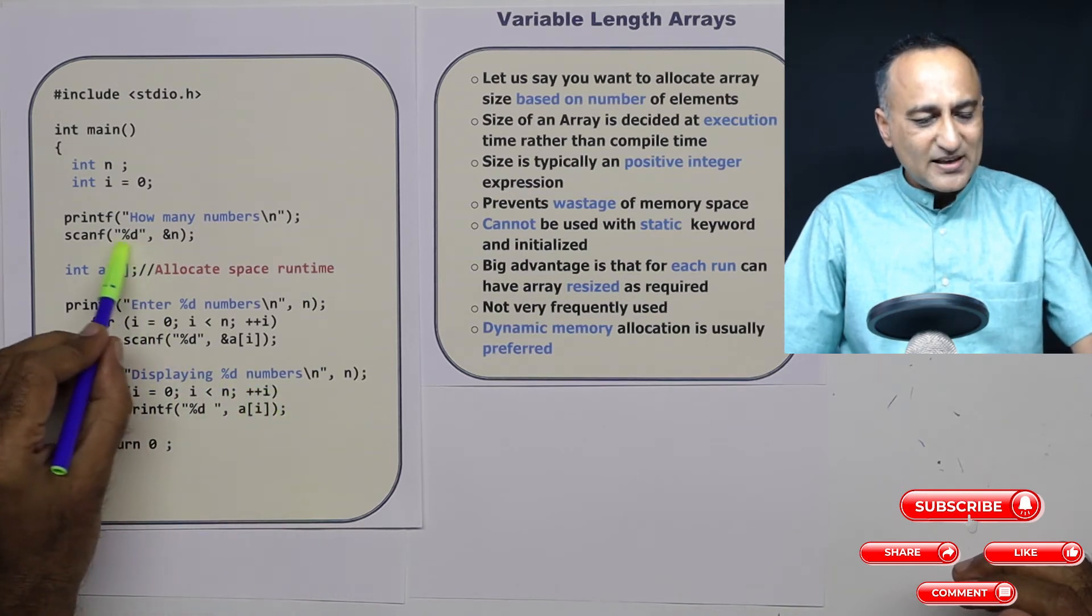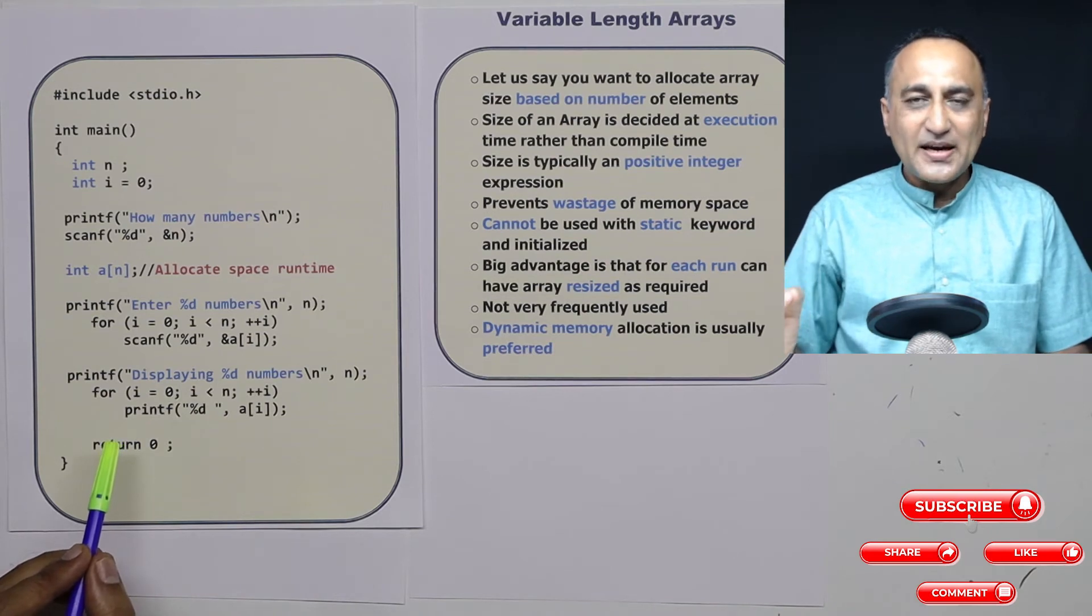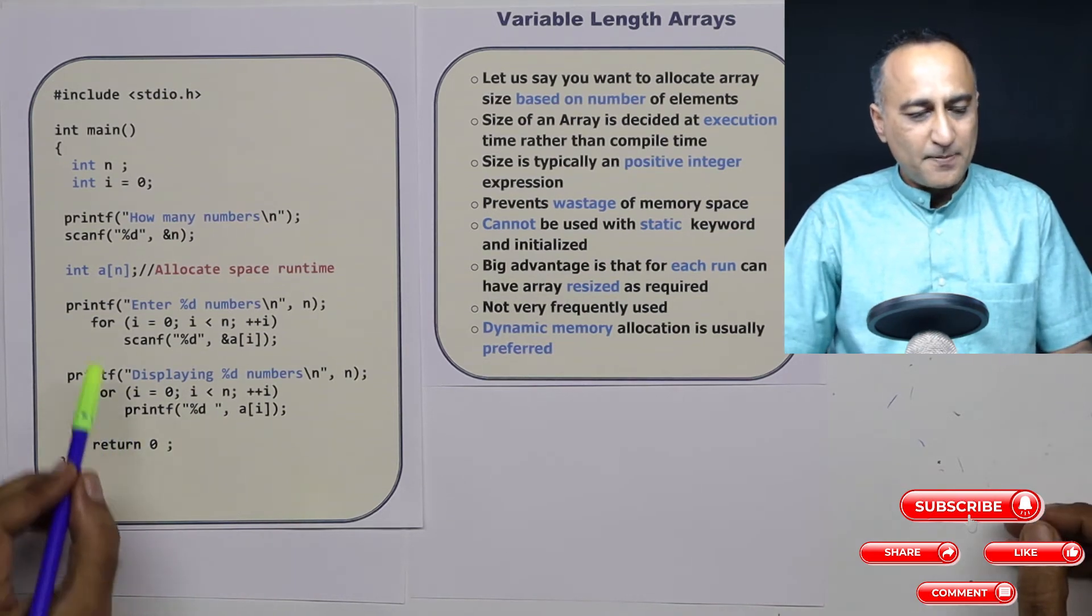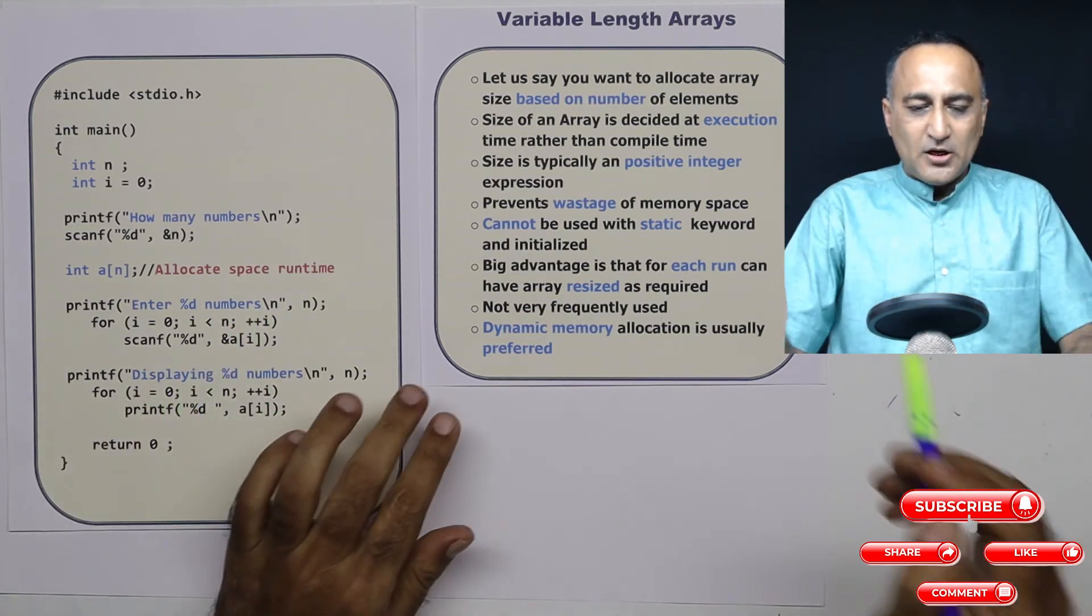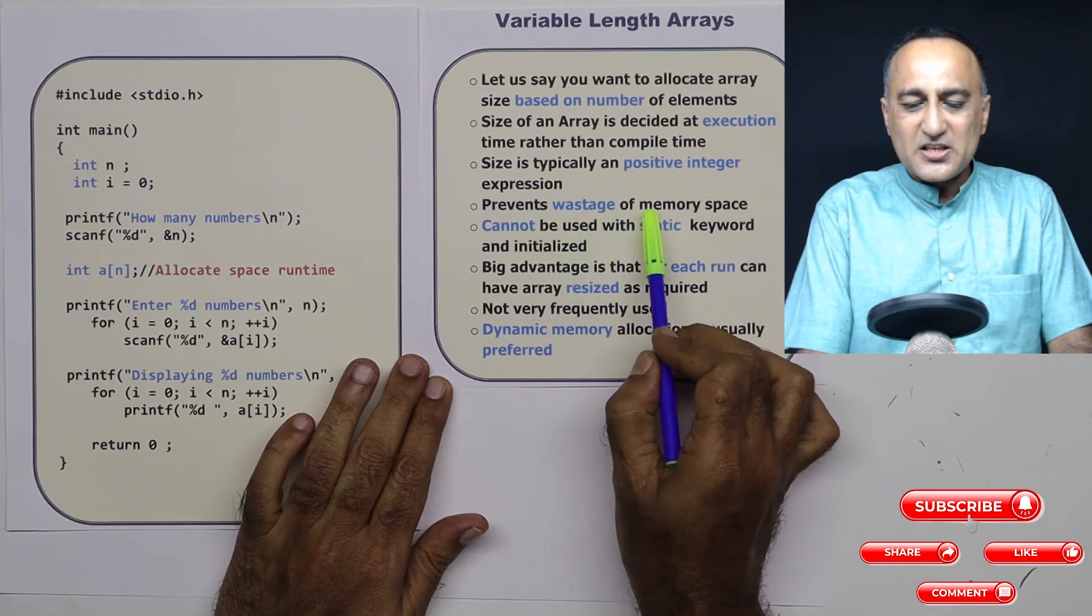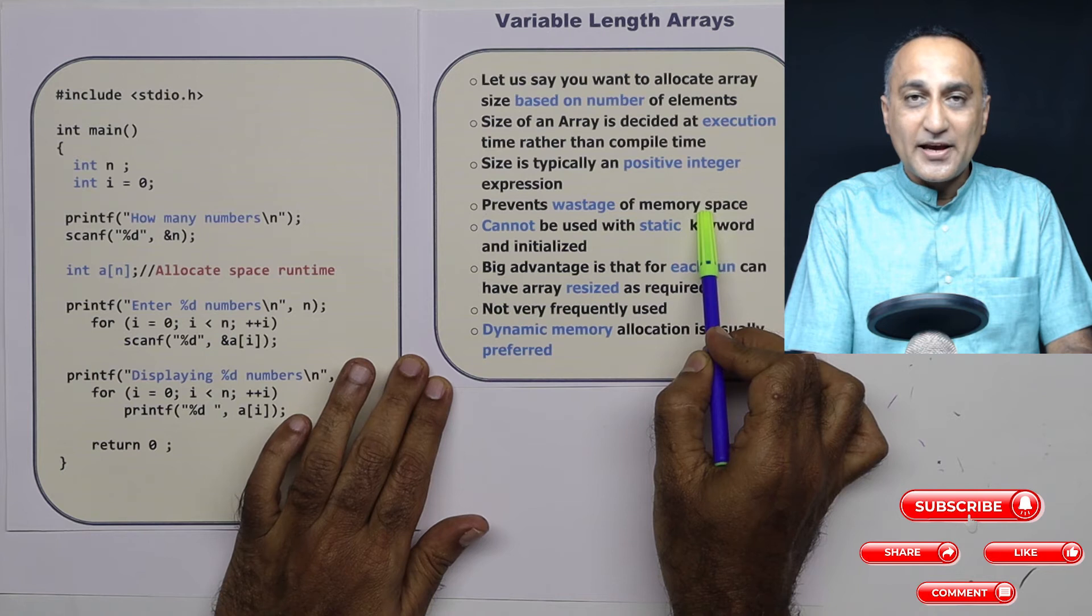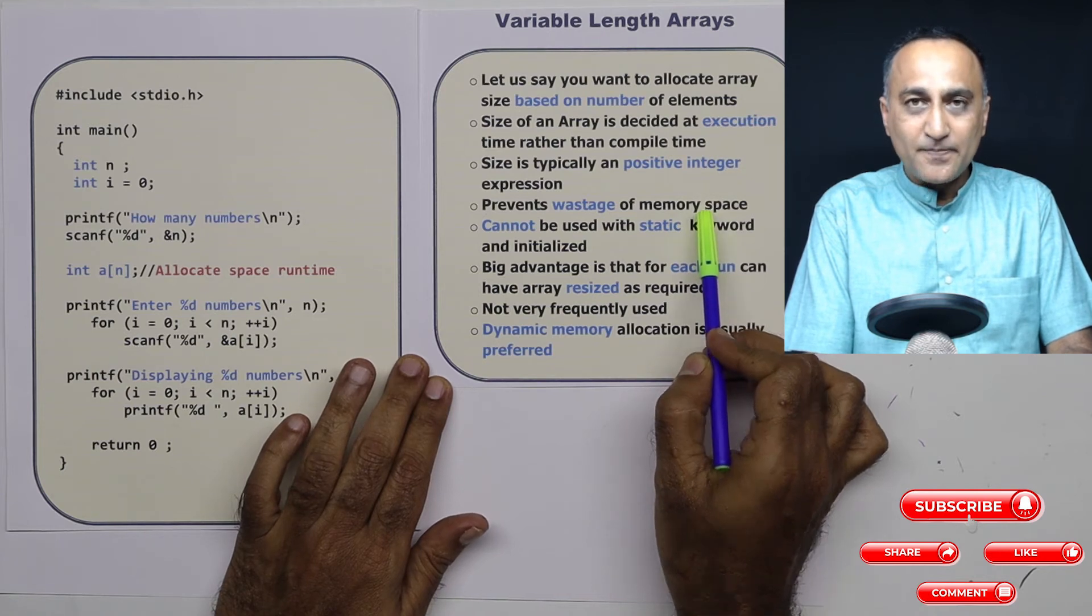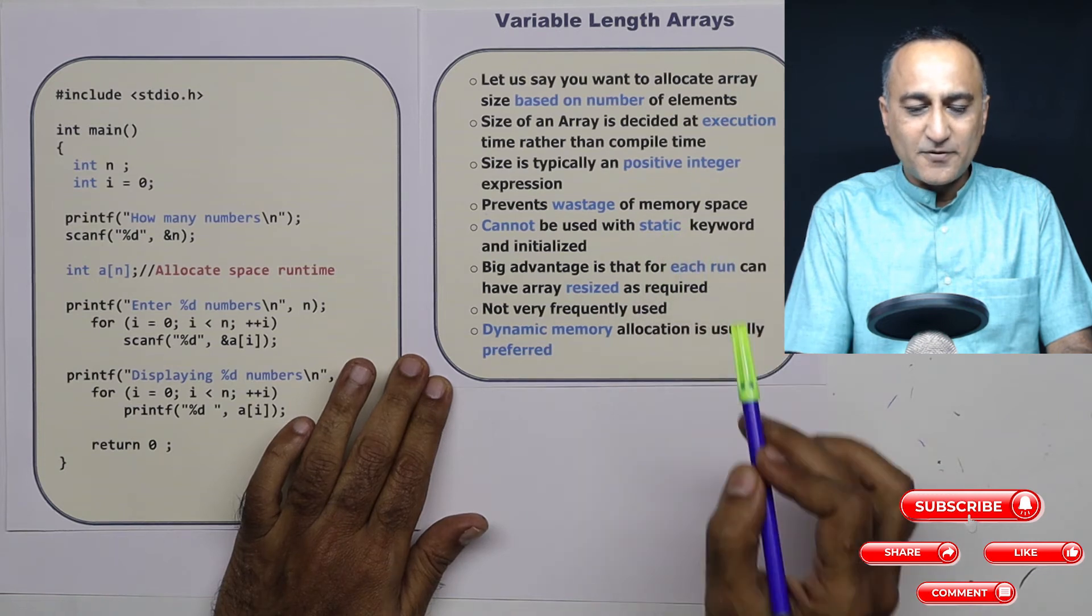So here what I have done in this particular statement, based on the numbers being entered at that particular point of time, I am allocating space for the array. The advantage of this is I'm preventing wastage of main memory because I'm allocating only the space required as per the user's requirement. But there are a few rules associated with this particular usage of an array.